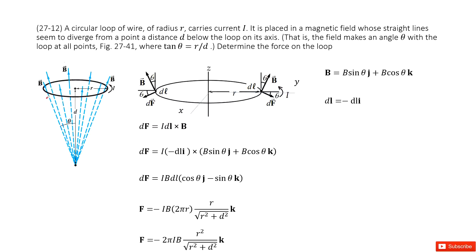So we look at this system. We have a circular loop of wire with radius R and current I, and it's placed in a magnetic field. We can see this magnetic field is a little bit difficult. It diverges from a point at a distance d below the loop. So this is how it looks like.